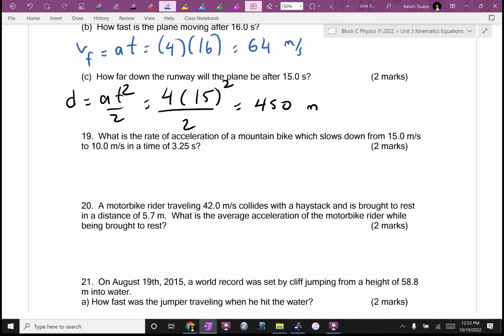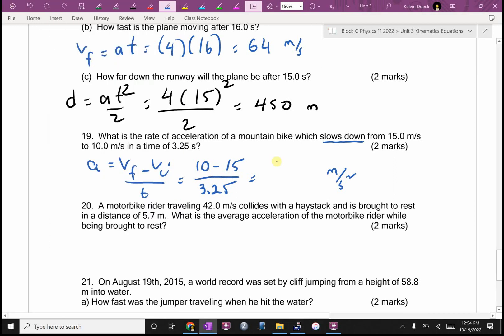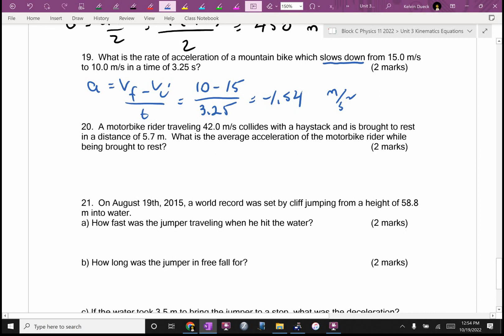What's the rate of acceleration of a mountain bike which slows down? The fact that I saw that, I said I'm going to get a negative acceleration. It's going to be A equals VF minus VI all over T. VF 10 minus VI 15 all over T. Bracket 10 minus 15 divided by 3.25. Negative 1.54 meters per second squared. Is that a big acceleration? No. You'd notice it, but it wouldn't interrupt your conversation.